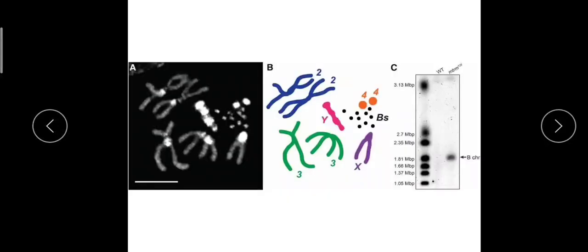The behaviour of B chromosomes during mitotic cell division differs from one species to another. For example, in rye, B chromosomes occupy a central position at metaphase, while in maize they occupy a peripheral position. They have been observed to behave in four different ways across species. In this figure, the dot-like structures visible here are the B chromosomes.